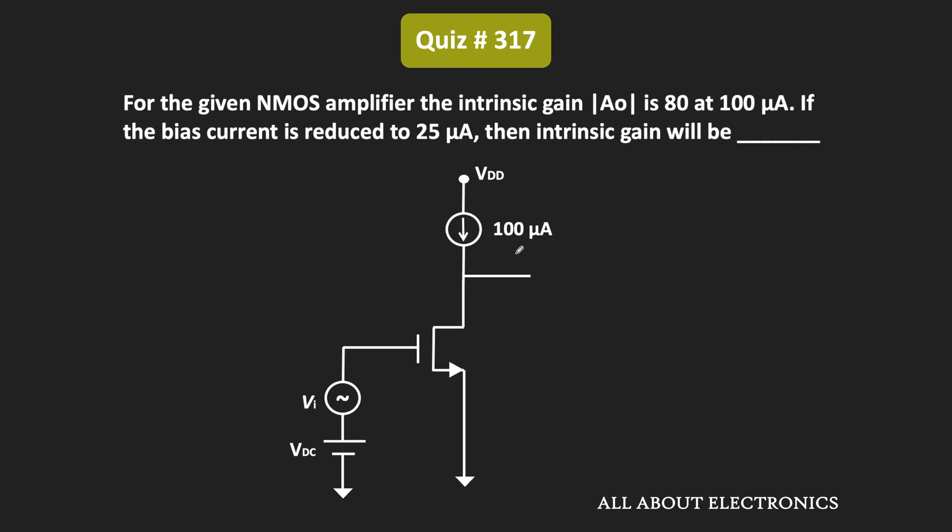So in this question, for the given NMOS amplifier, we have been given that when the bias current is equal to 100 microampere, then the intrinsic gain of this amplifier is equal to 80. Now if this bias current is reduced to 25 microampere, then we have been asked to find the new intrinsic gain.